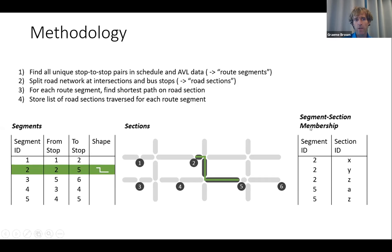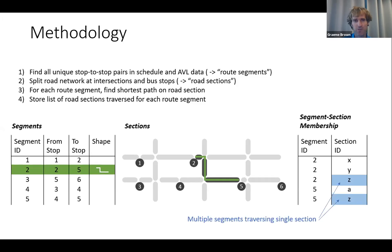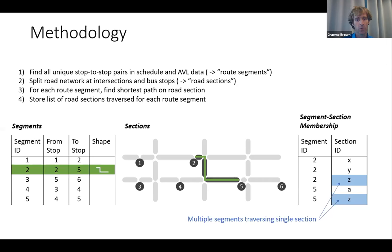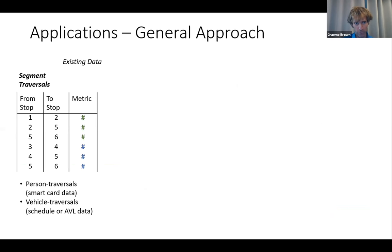We store the list of road sections for each segment. For segment two it traverses road sections X, Y, and Z; segment five also traverses section Z. This lets us identify that segments traveling from stops two to five and from four to five share a section of roadway. We then take our pre-existing segment traversal data — person traversals from smart card data or vehicle traversals from schedule or AVL data — join it to our new tables, and attribute metrics to the road sections.